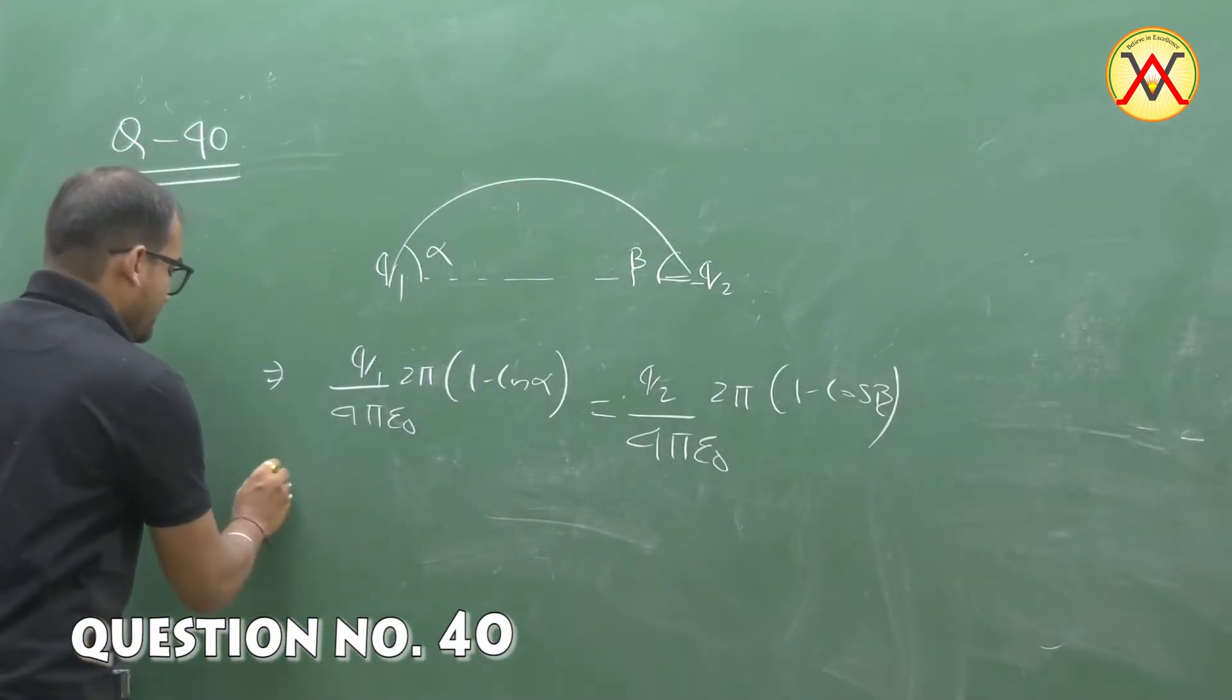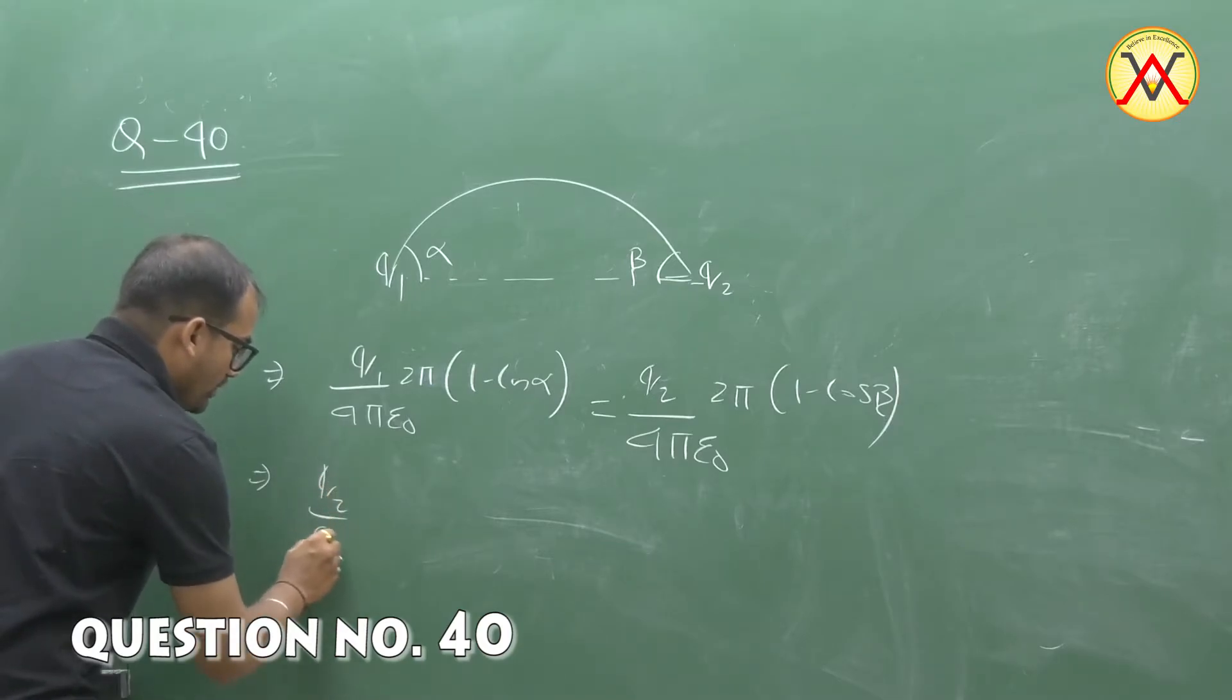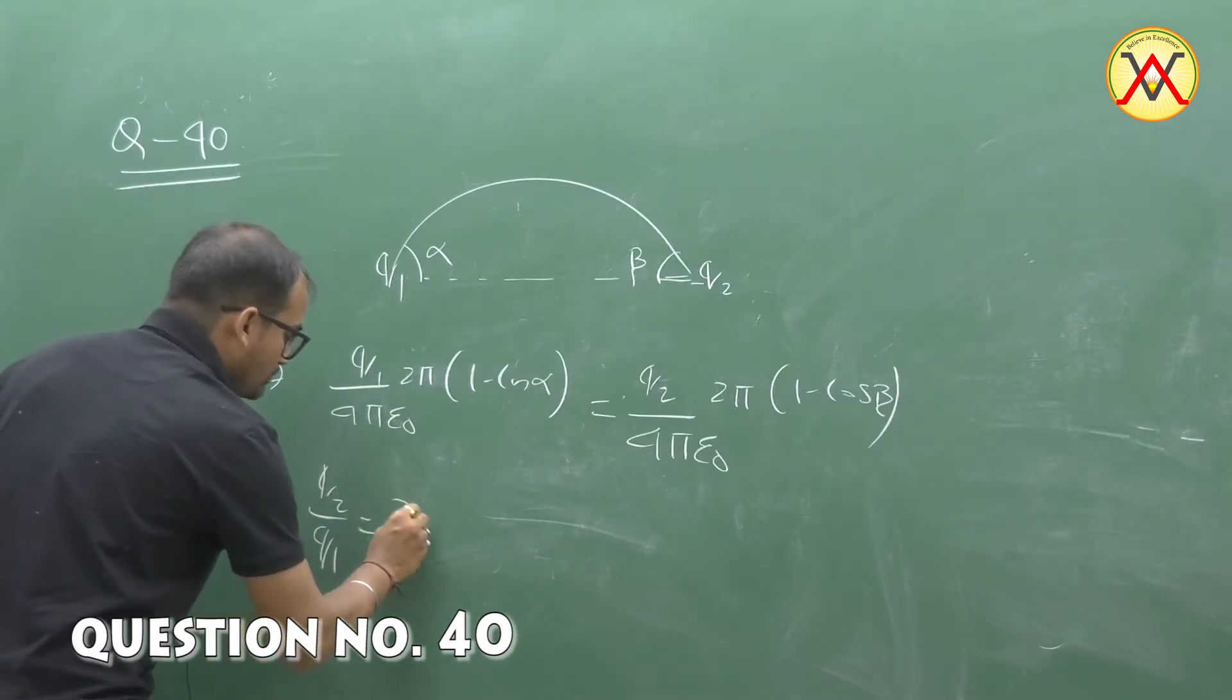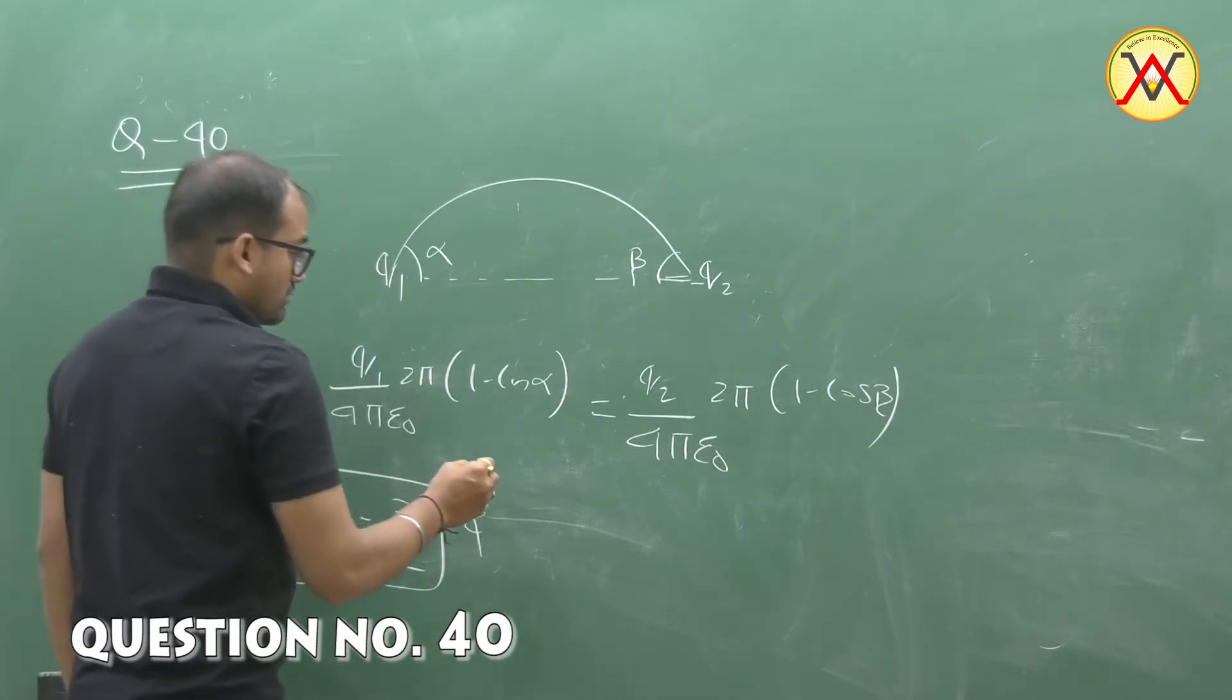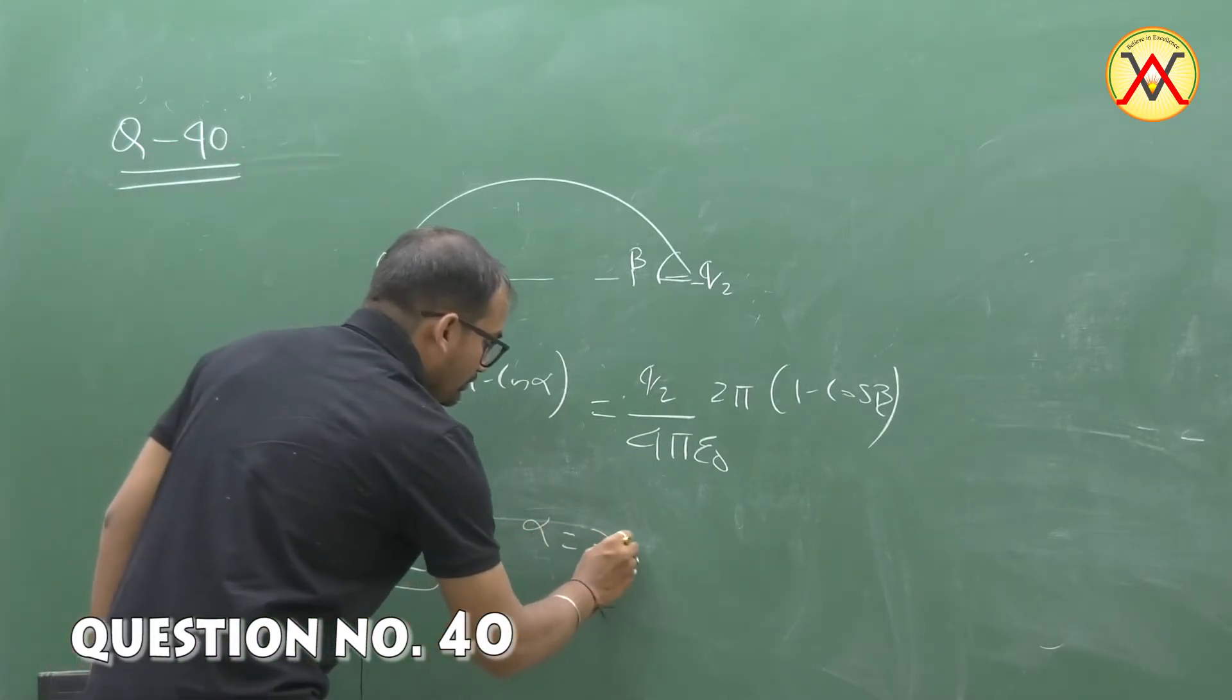As we have given that Q2 by Q1 equals to 3 by 2 and alpha equals to 30 degree.